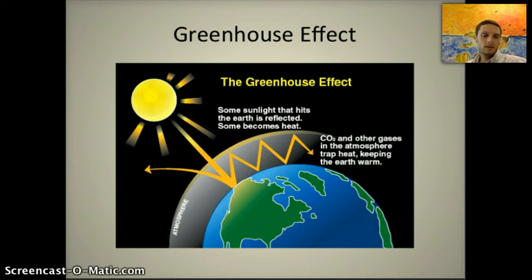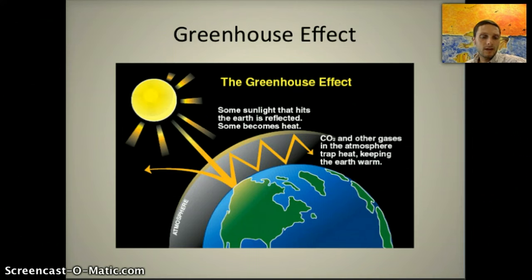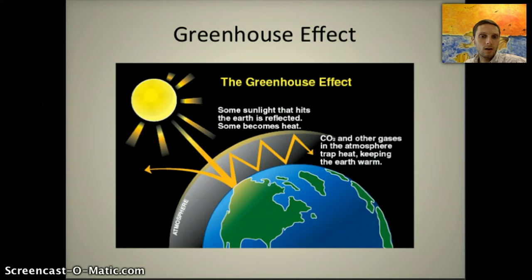Carbon dioxide is released into the atmosphere through the process of photosynthesis — that is one natural way it's found in the atmosphere, in addition to other greenhouse gases. Probably one of the biggest issues is that the amount of greenhouse gases, including carbon dioxide, in the atmosphere has increased quite a bit, particularly in the last few decades.